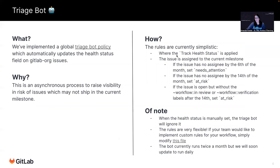What is it doing? If the issue doesn't have an assignee by the 6th of the current milestone, it will set the status to needs attention. By the 14th, if there's still no assignee, it will update to at risk. And if the issue is open but without the workflow label in review or verification after the 14th, it will also set at risk. I want to note that if you are using the triage bot policy on your issues and you manually set the health status on an issue, the triage bot will ignore it — so it allows the manual overrides to take precedence.